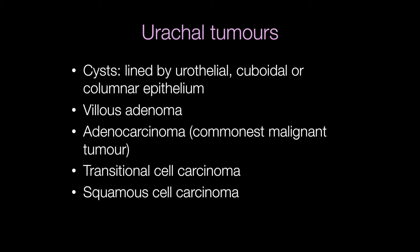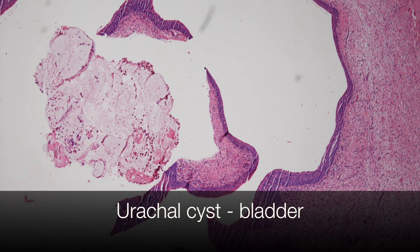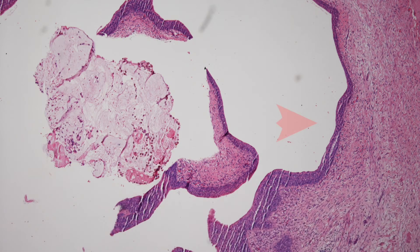Adenocarcinomas are the most common type of malignant urachal tumour. This is a picture of a urachal cyst arising in the bladder, and this is lined by urothelium.